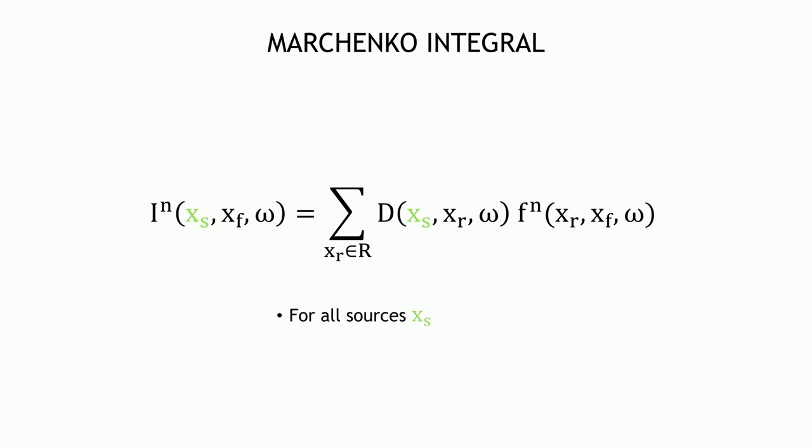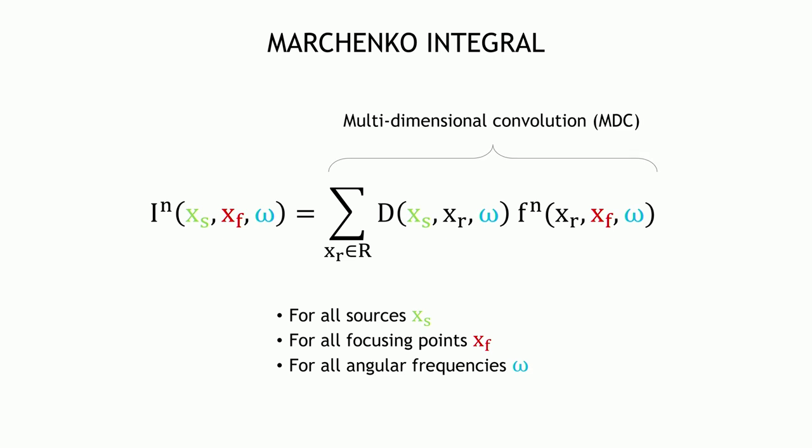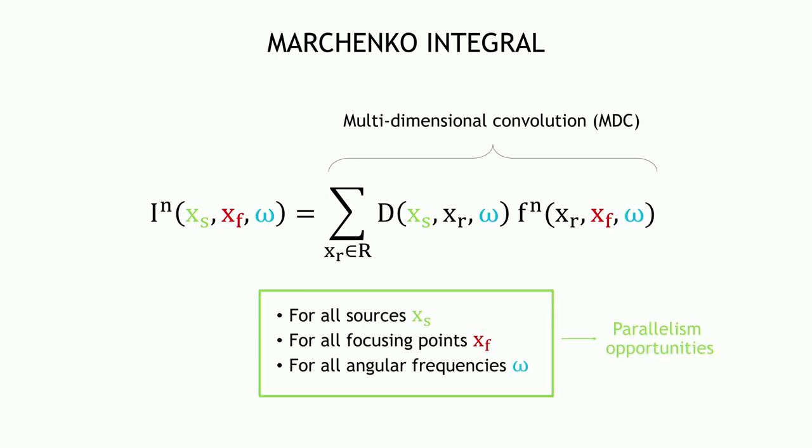We have to do this for all sources, all focusing points, and all angular frequencies — hence the name multi-dimensional convolution. It's essentially a large summation. The fact that we must do this for all sources, focusing points, and angular frequencies gives us parallelism opportunities, which is why we leverage the GPU.